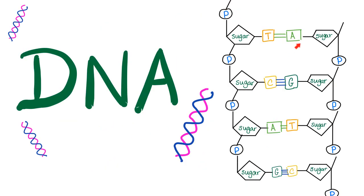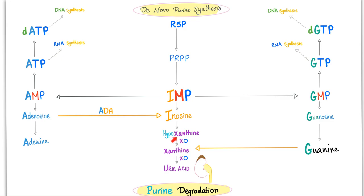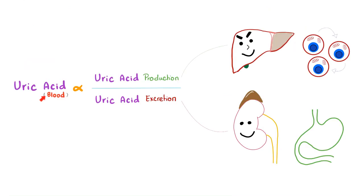Where do you get uric acid from? From purine metabolism — purine degradation goes through hypoxanthine, xanthine, uric acid, and then the kidney. Uric acid production over uric acid excretion: the liver produces uric acid, and if you have increased cell turnover, the nucleus has DNA, DNA has purines, and purine metabolism gives you uric acid — leading to hyperuricemia. Uric acid excretion is handled mainly by the kidney, with a minority excreted by the gut.